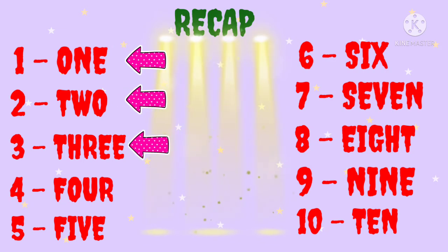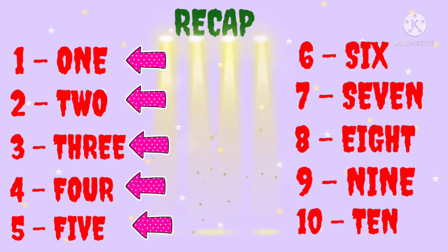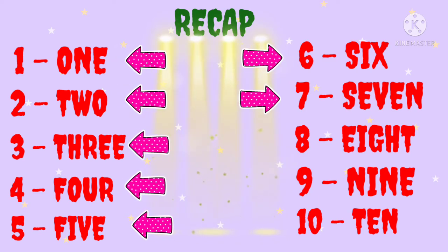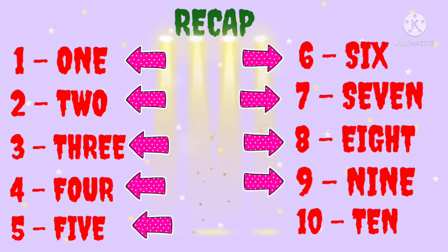Recap: O N E - 1. T W O - 2. T H R E E - 3. F O U R - 4. F I V E - 5. S I X - 6. S E V E N - 7. E I G H T - 8. N-I-N-E - 9. T-E-N - 10.